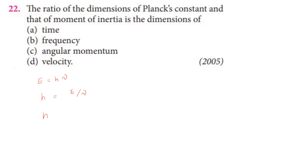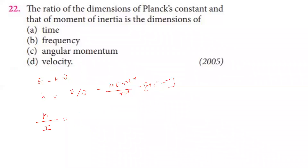Planck's constant divided by moment of inertia. Planck's constant equals energy (ML²T⁻²) divided by frequency (T⁻¹), giving ML²T⁻² × T, so ML²T⁻¹. That is the dimension formula of Planck's constant: ML²T⁻¹.